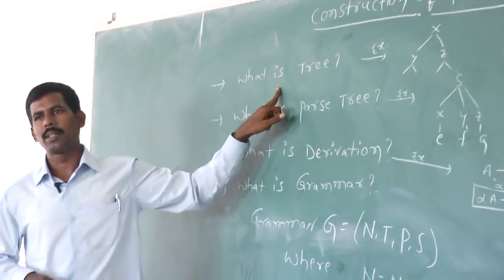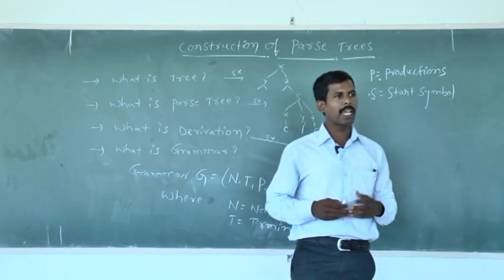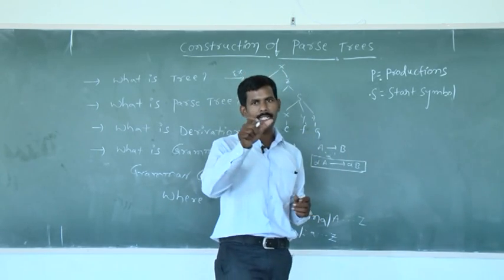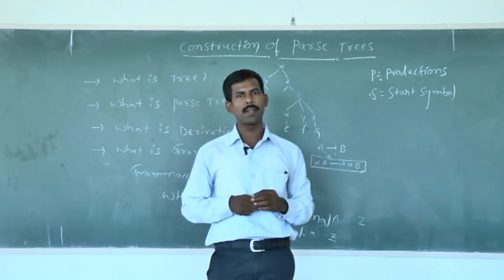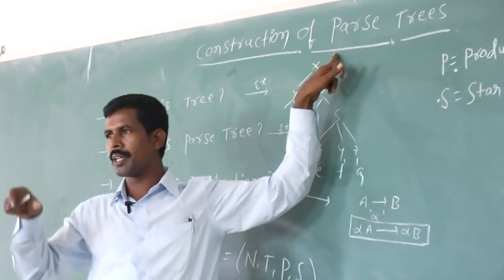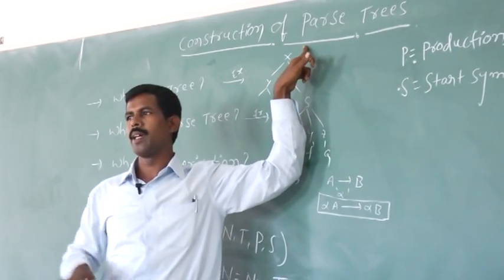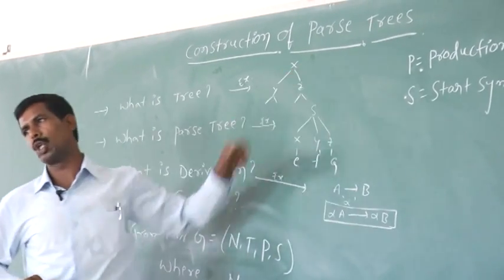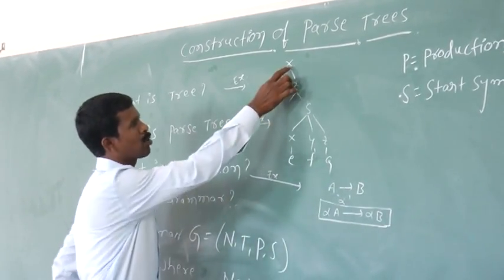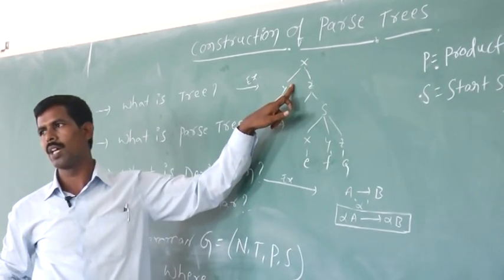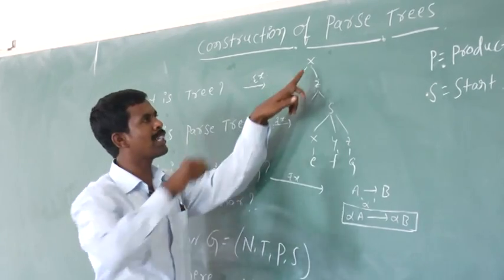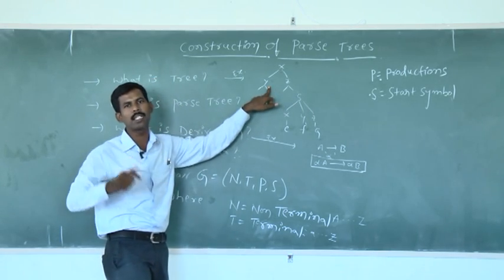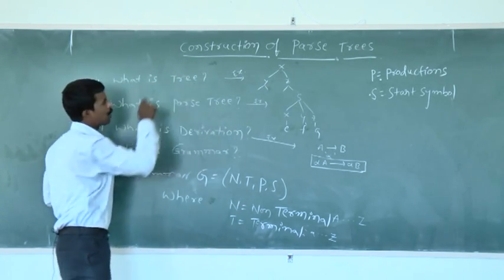What is a tree? The tree is generally defined as a structure which has two children — the left child and the right child. But whenever we want to discuss parse trees, the tree is defined in a graphical manner. The tree is defined graphically as a finite set of nodes — for example, nodes x, y, z. Among these nodes, one special node is taken as the root node, and the remaining nodes are taken as the interior nodes and the leaf nodes.